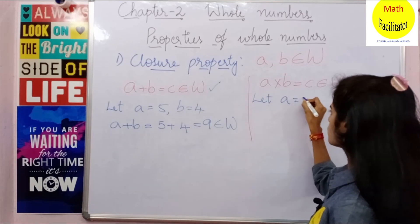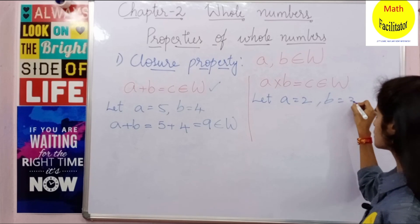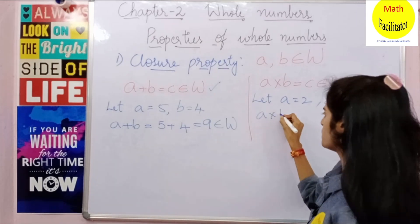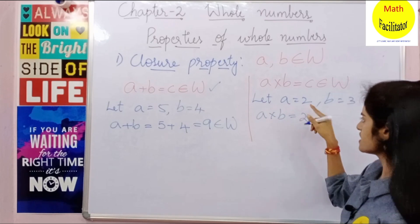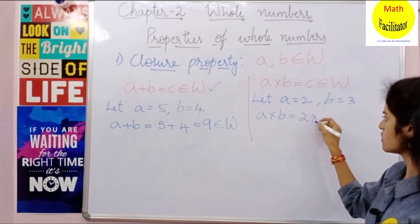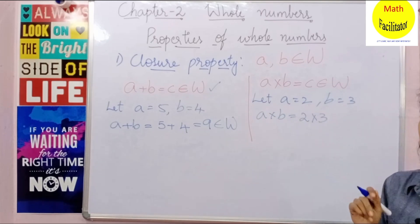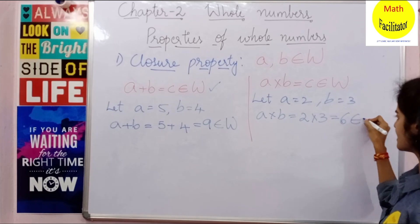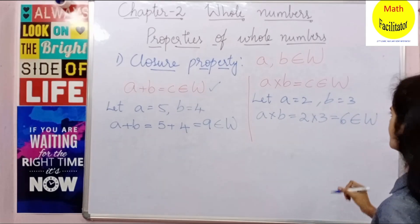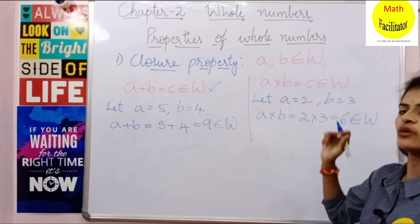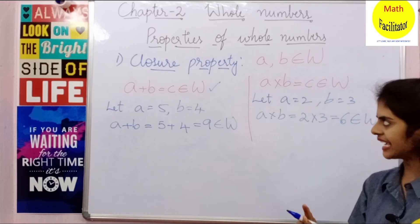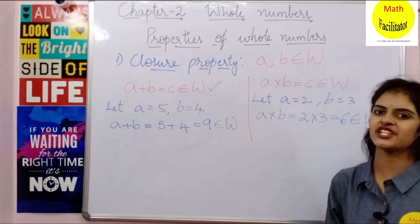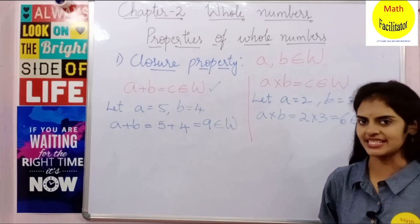Let A equal to 2 and B equal to 3. A into B is 2 into 3, which is 6. You know that 6 belongs to whole numbers. So A into B equals C belongs to whole numbers, which means closure property under multiplication is satisfied for whole numbers.